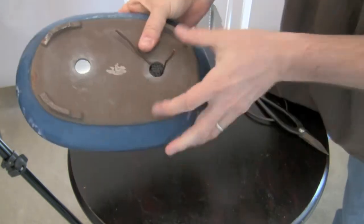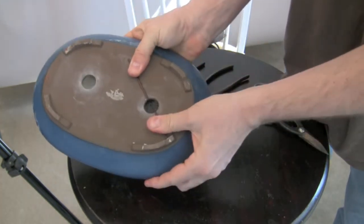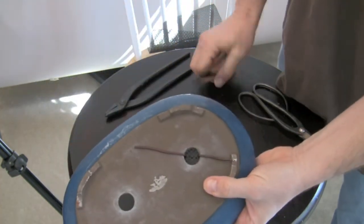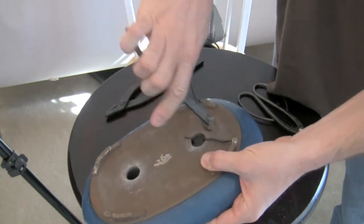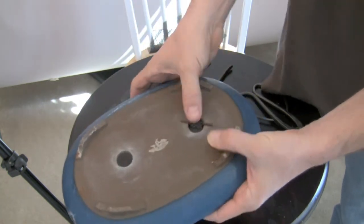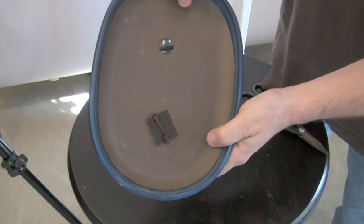Turn it over, bend these two sides down, and then you're going to take your wire cutters, trim that up a little bit. There it is, nice and easy.